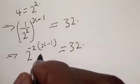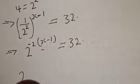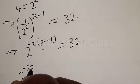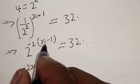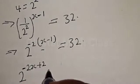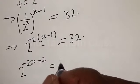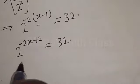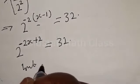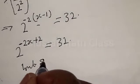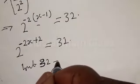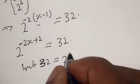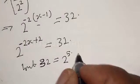Now let's open this bracket. We have 2 raised to power minus 2 times s, which is minus 2s. Then minus 2 times minus 1 will be plus 2, equal to 32. And 32 is equal to 2 raised to power 5.